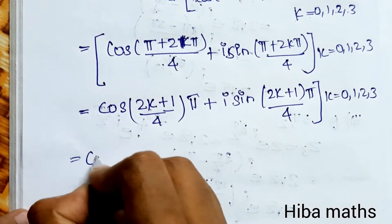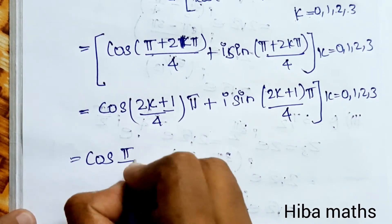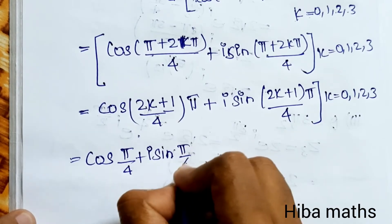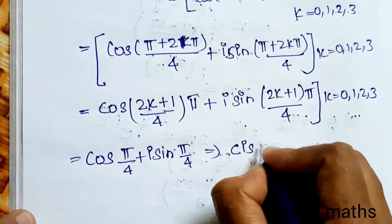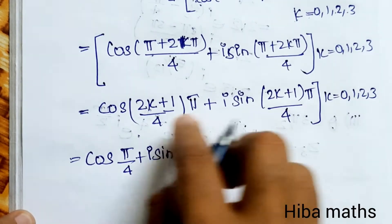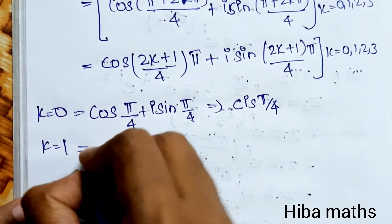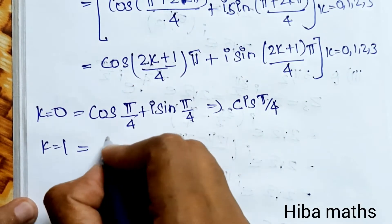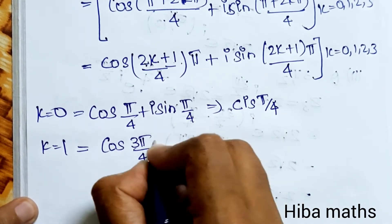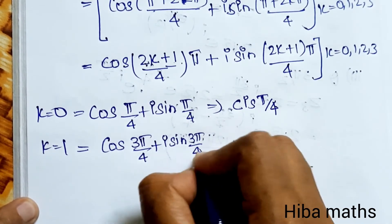When k = 0: substituting gives cos(π/4) + i sin(π/4). When k = 1: (2×1+1) = 3, giving cos(3π/4) + i sin(3π/4).